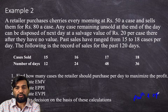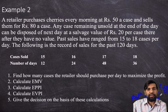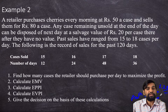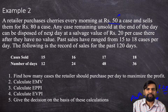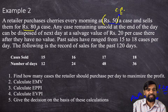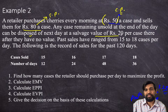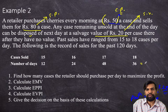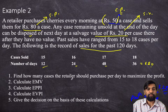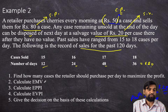This question is taken from Production and Operations Management, page number 128. A retailer purchases a series every morning at Rs. 50 a case and sells them for Rs. 80 a case. Any case remaining unsold at the end of the day can be disposed of the next day at a salvage value of Rs. 20 per case. This is historical data of 120 days — adding all days gives us 24, 48, and 36, totaling 120 days. We need to find how many cases the retailer should purchase per day to maximize profit, and calculate EMV, EPPI, and EVPI.